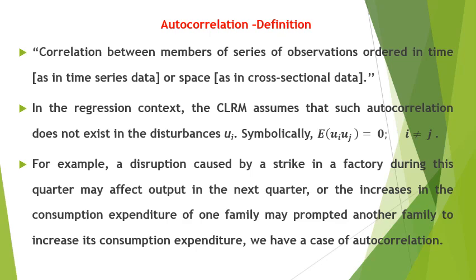For example, if we are dealing with quarterly time series data of the GDP of a particular country, we generally assume that a rise or fall in GDP this quarter due to some reason may not carry over to the next quarter. Similarly, if the output of a factory is lower this quarter due to a strike among employees, we do not expect this disruption in output to carry over to the next quarter. If we find a momentum is inbuilt in the movement of GDP figures among successive quarters, or in the output of the factory, or in the movement of stock prices, we have the problem of autocorrelation.